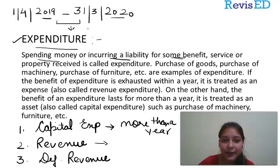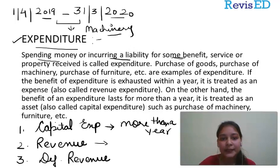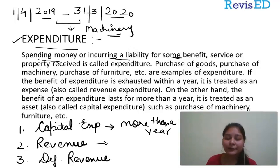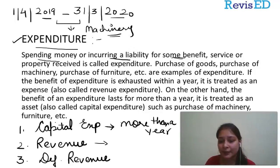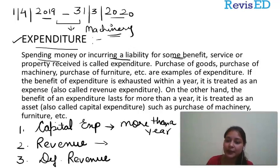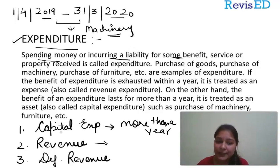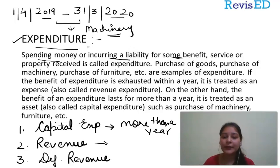let's say I have purchased a machine. Does that mean it is going to provide me benefits for this accounting period only? Or will it provide me benefit next year as well? Yes, it is going to provide me benefit maybe next year and the year after. So, capital expenditure is one which is going to provide benefit for more than a year.